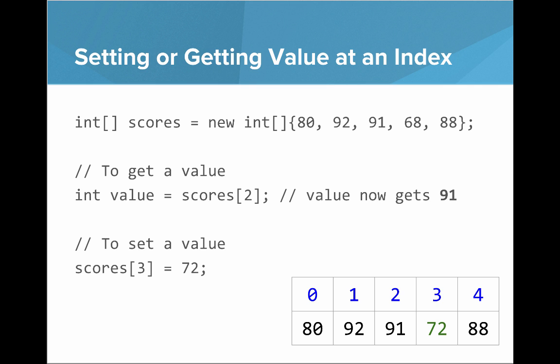And you can see when we go through that code, now in our array, index three has the value 72.